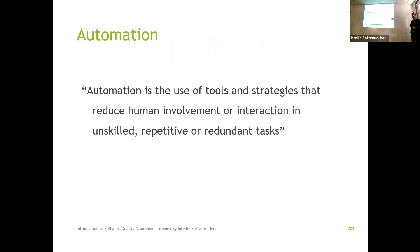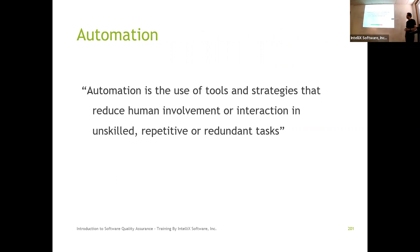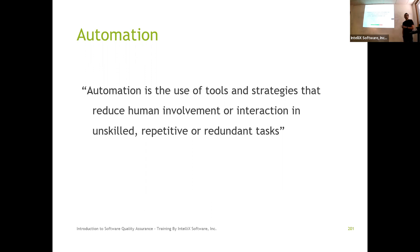What is automation? By definition — I'll let you guys read for a minute and then we'll talk about it. Automation is nothing but the use of tools and strategies that reduces human involvement or interaction for unskilled, repetitive, or redundant tasks.